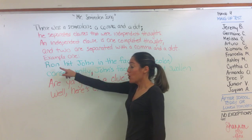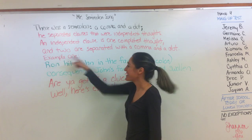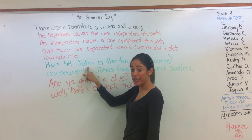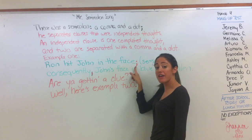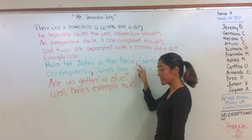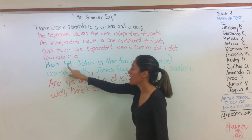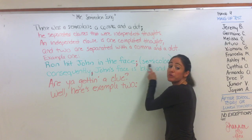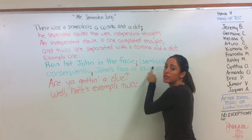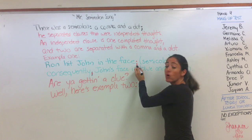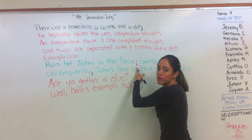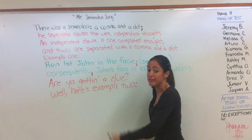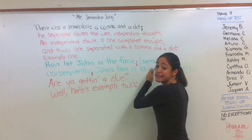Next line: 'Example one:' and then write the example. 'Ron hit John in the face.' Then write a semi-colon — the comma and dot symbol — and in parentheses write the word 'semi-colon,' because it's a song and we'll be saying that word out loud when we sing it.